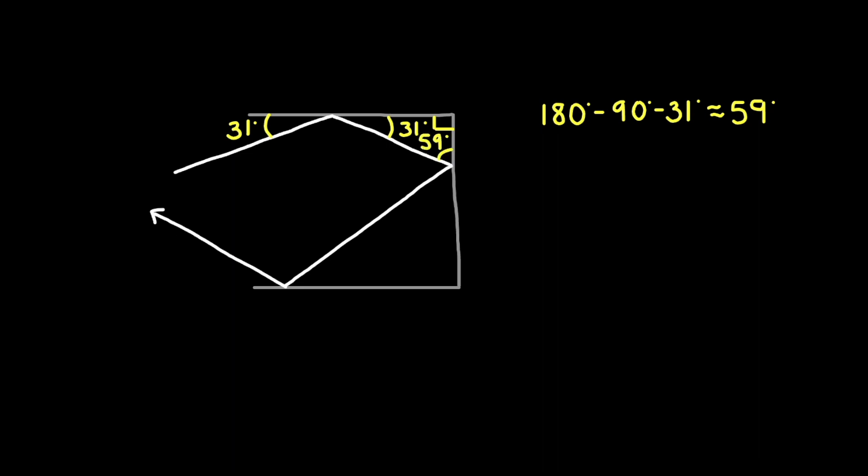Yet again we have a right triangle formed between the laser beam, the second mirror, and the third mirror. We can calculate the incident angle on the third mirror to be 31 degrees, which of course means that the angle of reflection will also be 31 degrees. So that's it, that's our answer: 31 degrees.